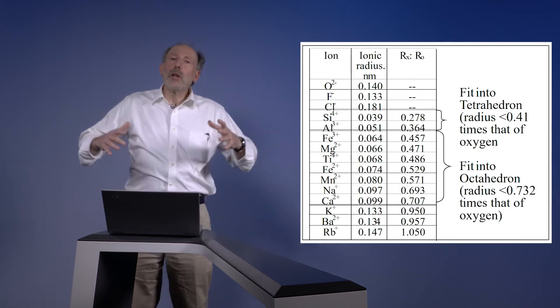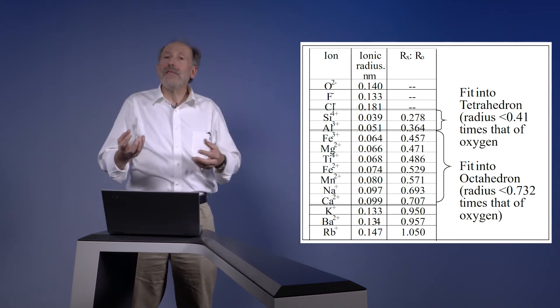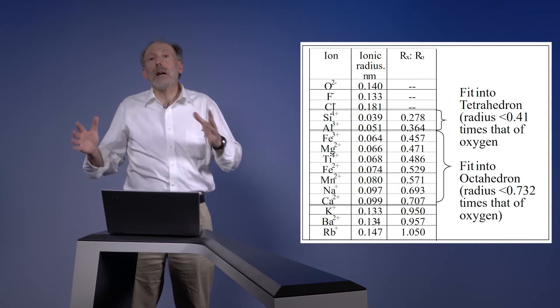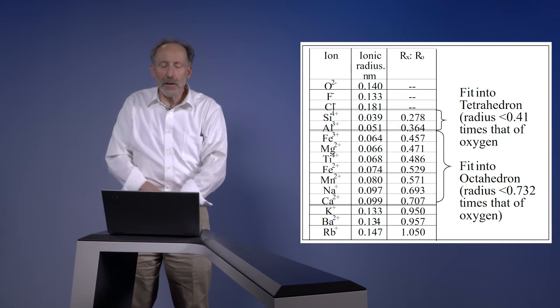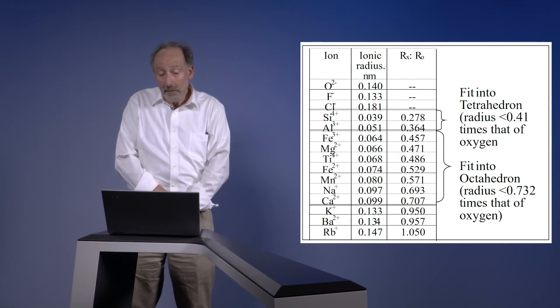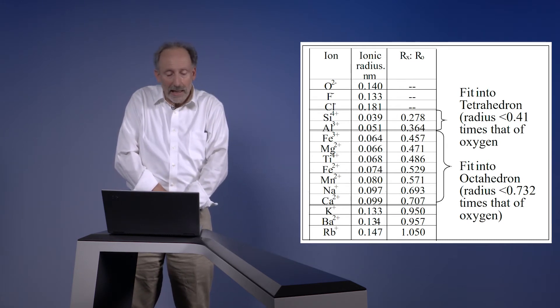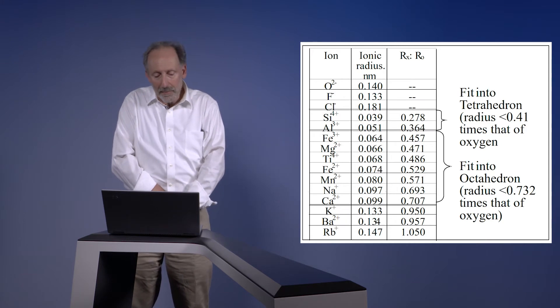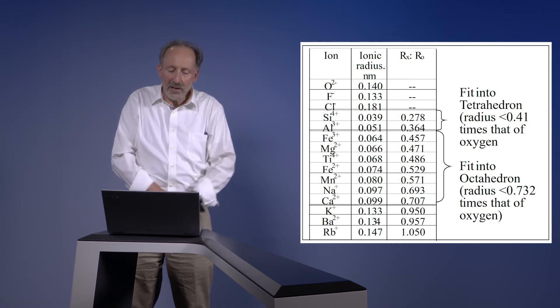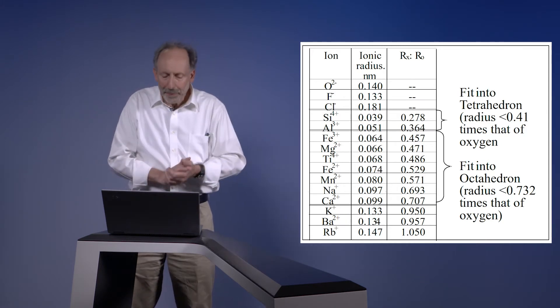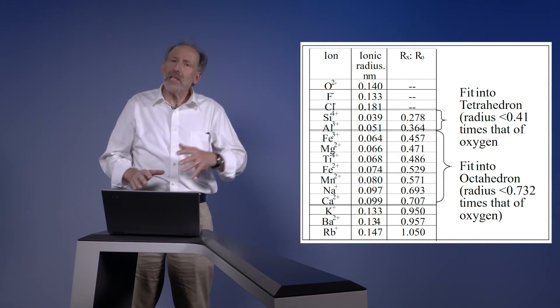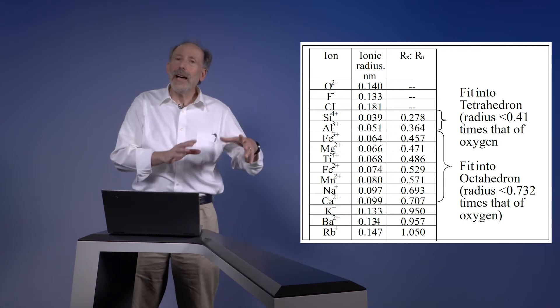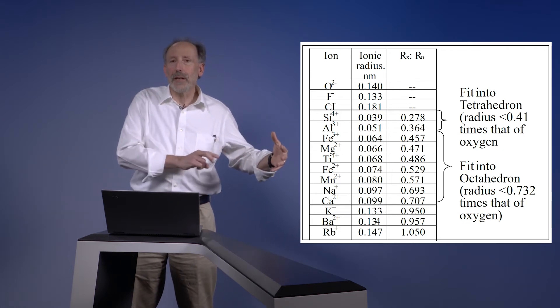On the other hand, if we go to an octahedra, it can fit something 0.73 times the size of oxygen, which opens a huge range of different charged elements that could go in. Iron, magnesium, titanium, manganese, sodium, and calcium, etc. But you'll see that only titanium has a charge of four. The rest of them will again leave a negative charge balance on the surface.